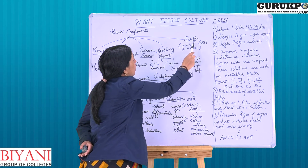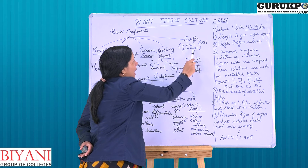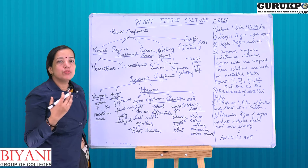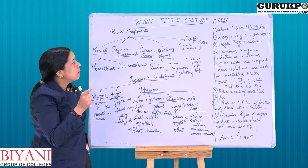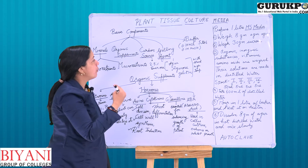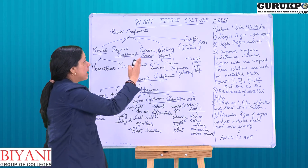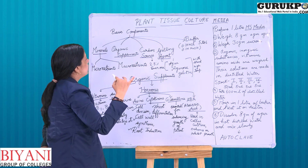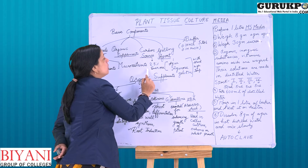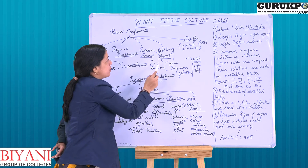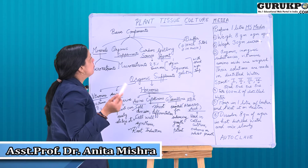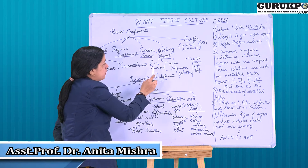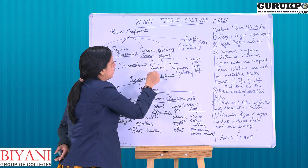The buffering agents include 0.1 M HCl and 0.1 M NaOH. Using a pH meter, we ensure the pH of the media is between 5 and 6, which is necessary because pH determines the absorption of nutrients, mineral ions, organic supplements, carbon source, and gelling agent. The carbon source used is generally sucrose at 2.5% concentration, which provides energy and is easily utilized. Glucose can also be used as an alternative.